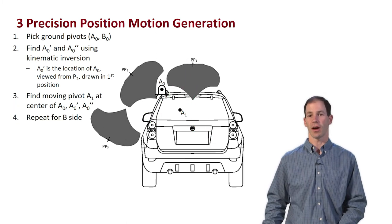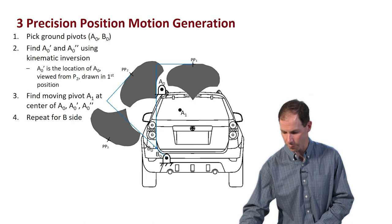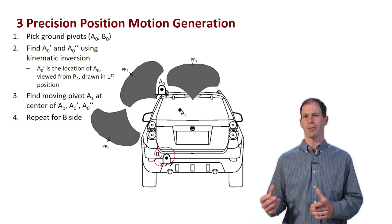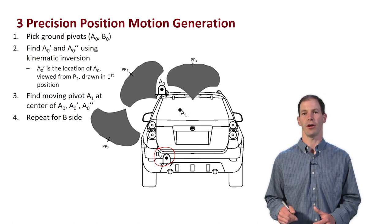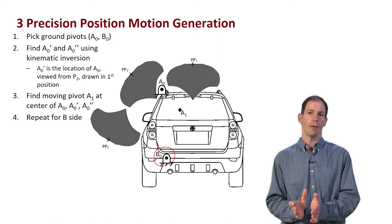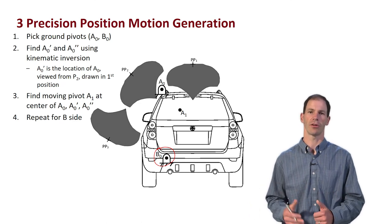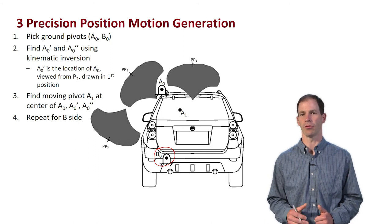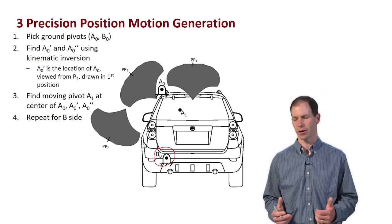Now we'll repeat this for the B side of the mechanism. I'm going to place the ground pivot B0 down near the bumper. The reason I'm placing it there is because this is the solution we got when we picked our moving pivots and found the ground pivots previously. If I pick the ground pivot here, I should get a moving pivot at the solution we had picked before — this allows us to verify our previous solution and confirm we're getting the same result with this technique. And again, this placement is a designer's choice.